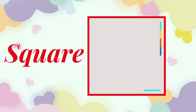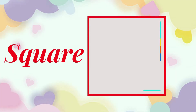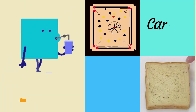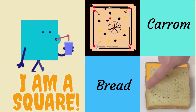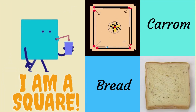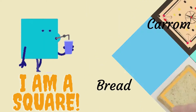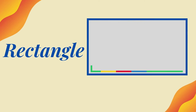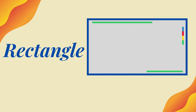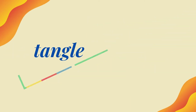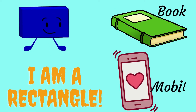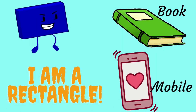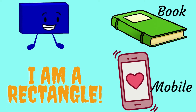Square - it has four sides. I'm a square. Carom board and bread are in square shape. Rectangle - it has four sides, two sides are long and two sides are short. I am a rectangle. Book and mobile are in rectangle shape.